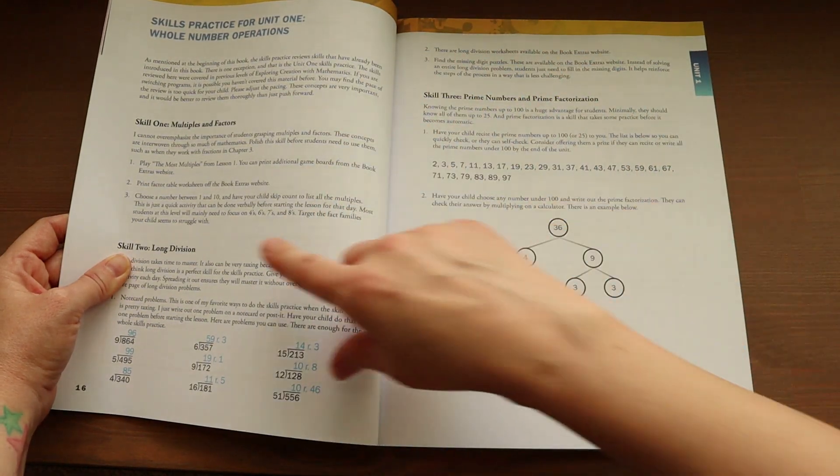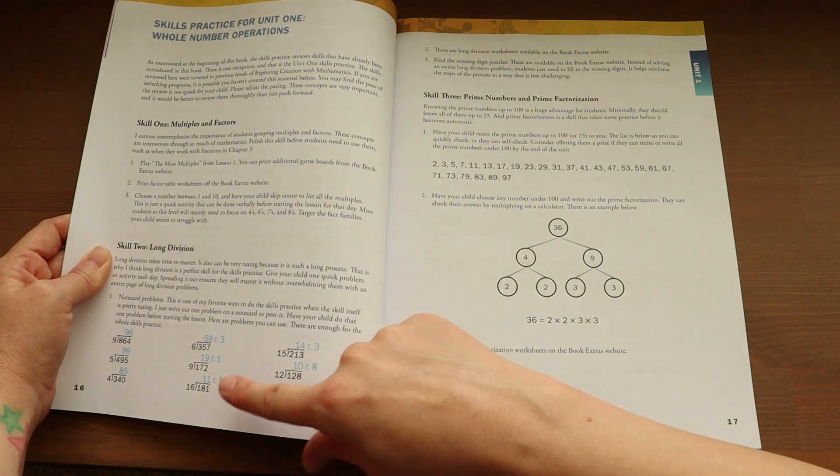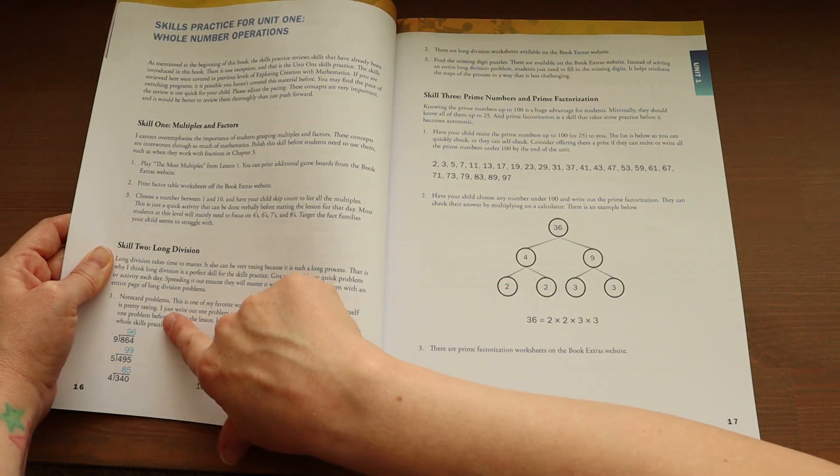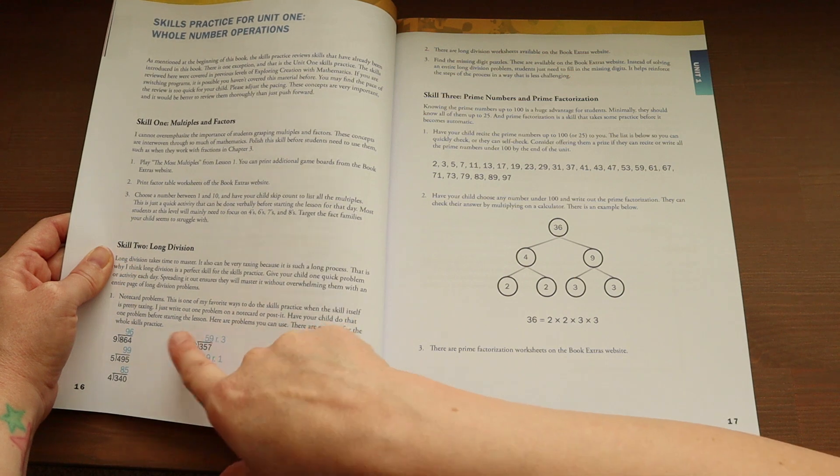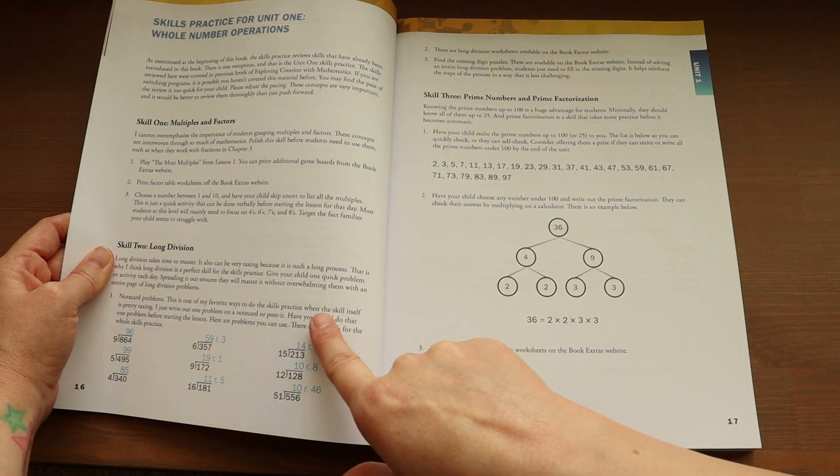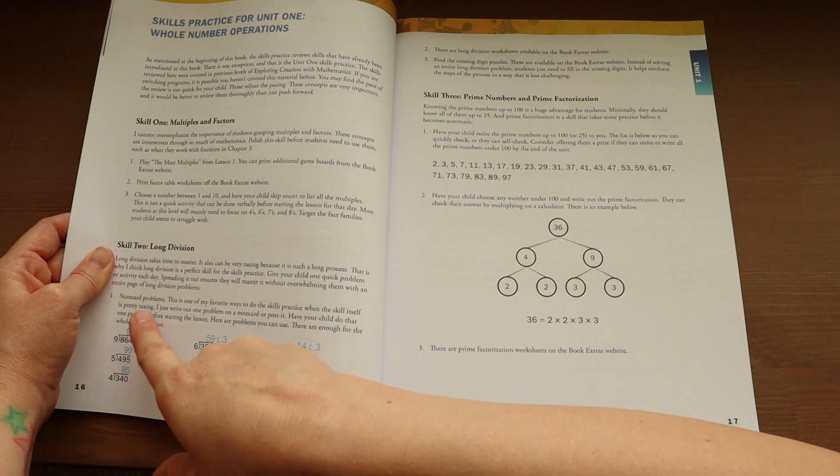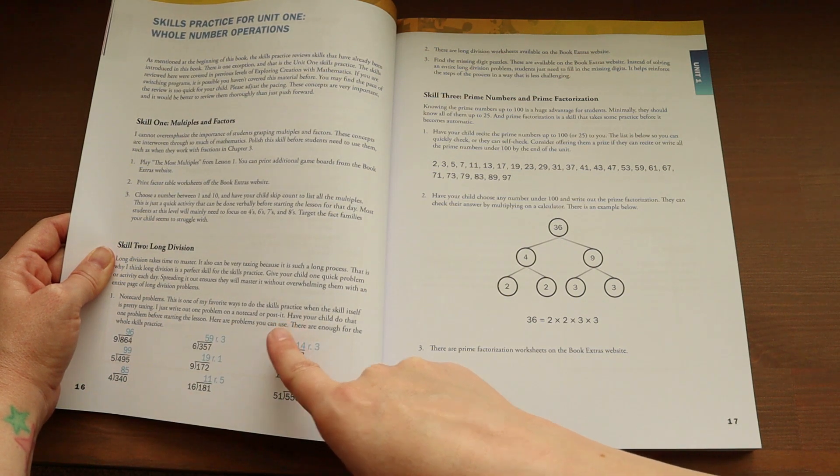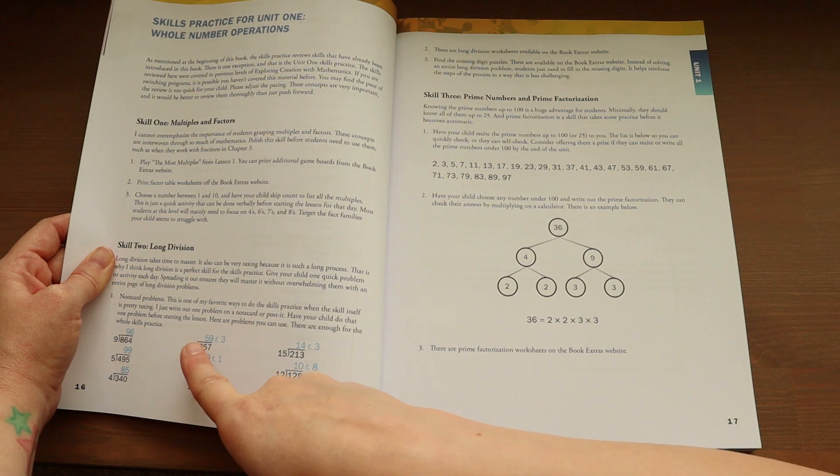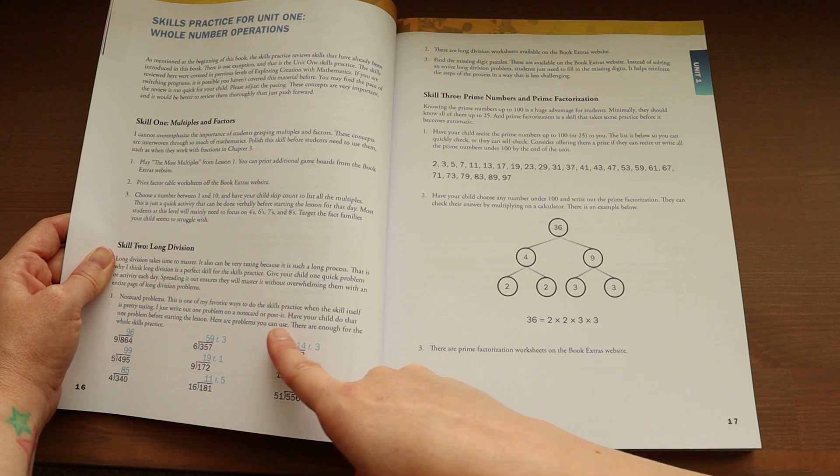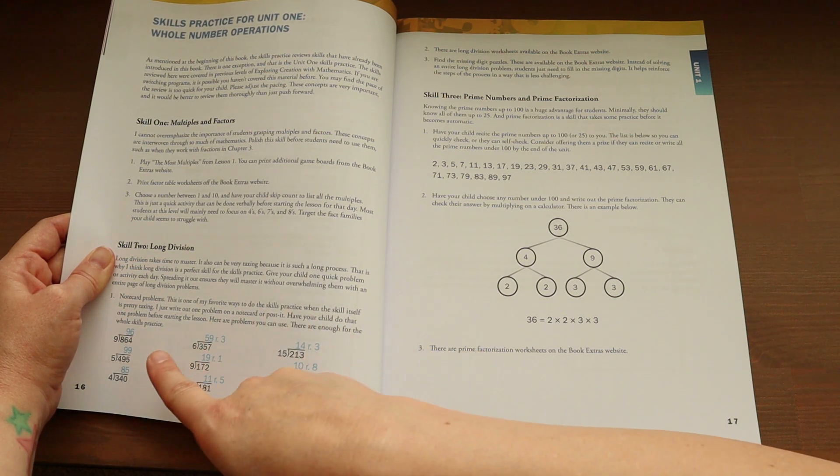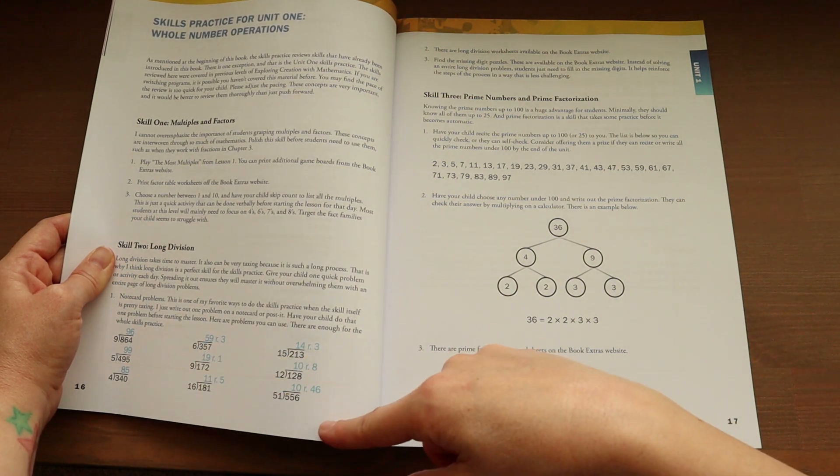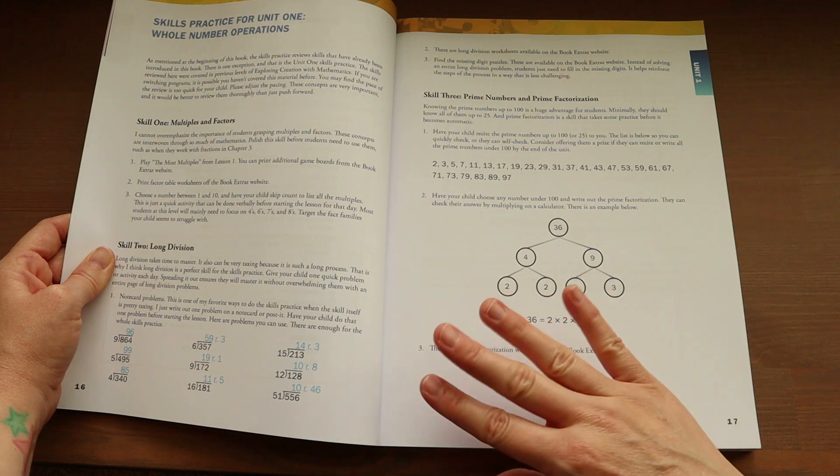On to the next unit. It gives you some game ideas. And this one right here, it tells you note card problems. So this is one of my favorite ways to do skills practice when the skill itself is pretty taxing. I just write out one problem on a note card or post it. Have your child do that one problem before starting the lesson. Here are problems you can use. There are enough for the whole skills practice. And so it'll give you the practice questions that your child should know.